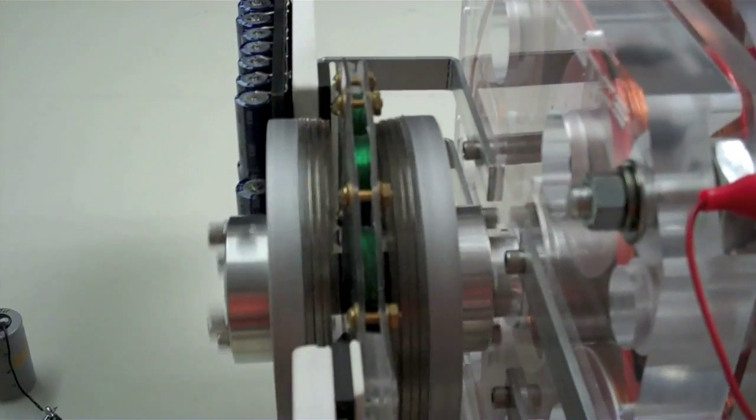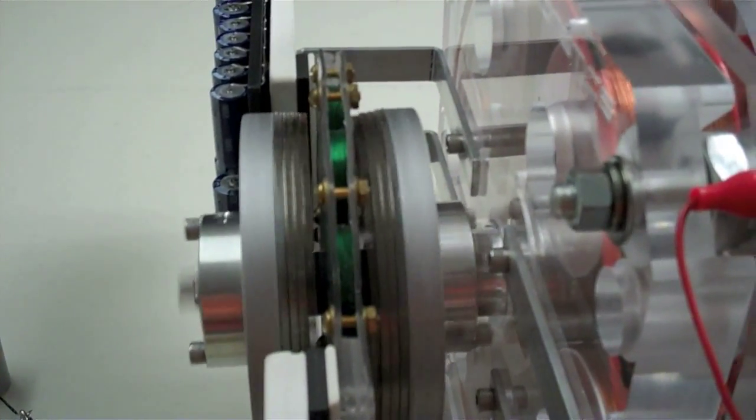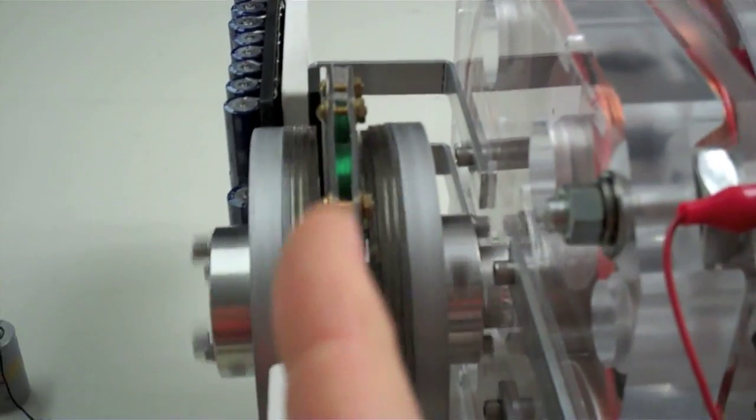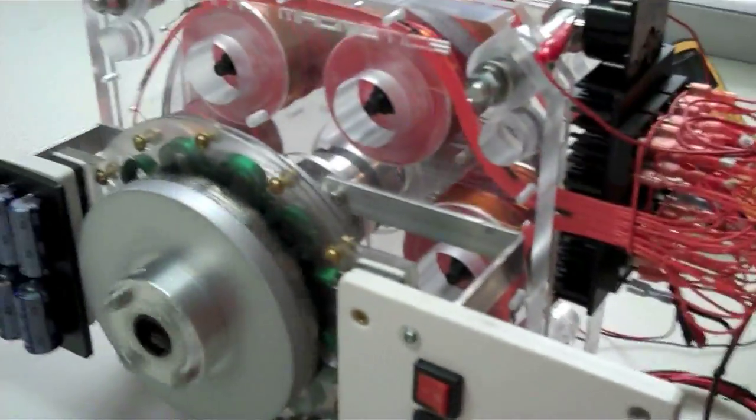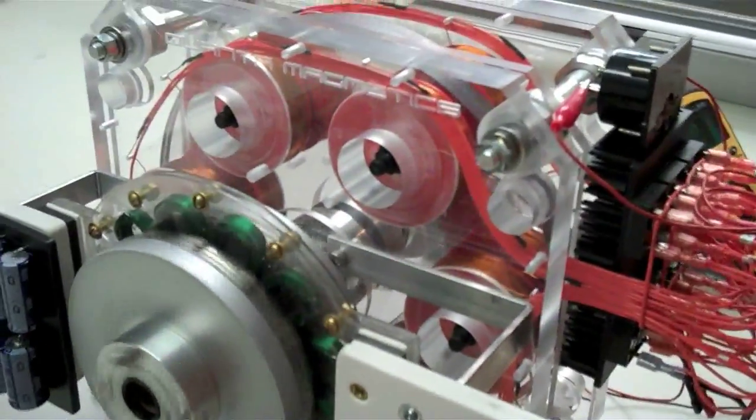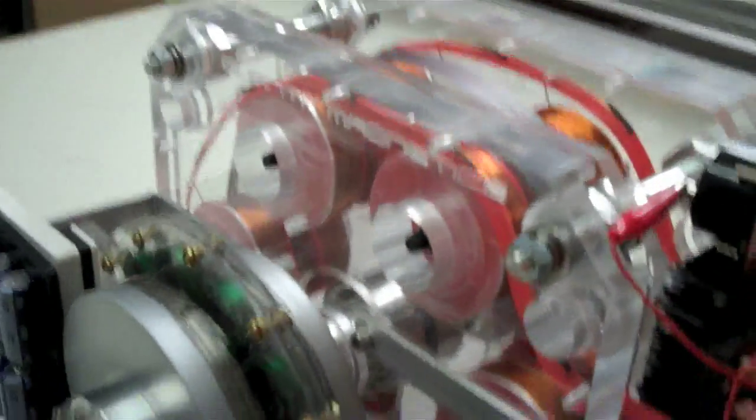Two layers of N52s and two layers of N42s. So we're talking about some serious lines of flux cutting through those coils to generate some pretty incredible power. This thing will run and run and run on very little power.